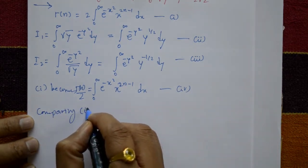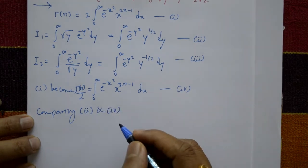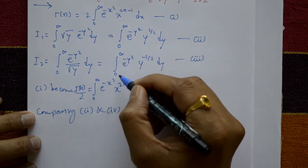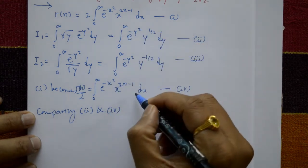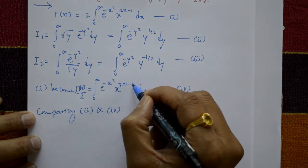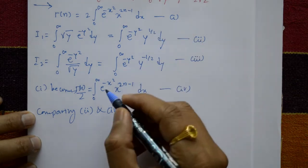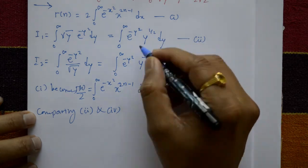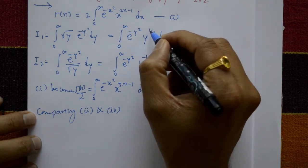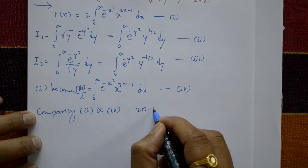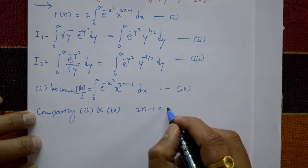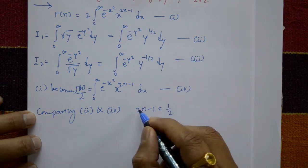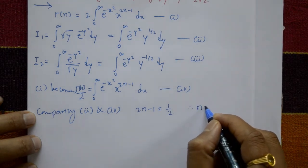Comparing equations 2 and 4: the integrands e raised to minus x squared and e raised to minus y squared match, so we compare exponents: 2n minus 1 equals 1/2. Shifting: 2n equals 1/2 plus 1, which is 3/2. Cross-multiplying by 2 gives n equals 3/4.